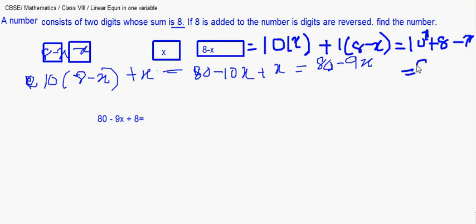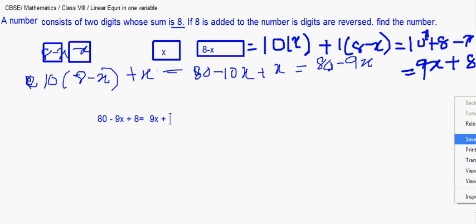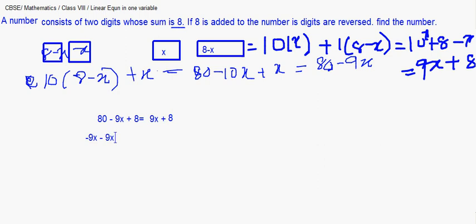The reversed number is 9x plus 8. We substitute this into the equation: 80 minus 9x plus 18 equals 9x plus 8. Carrying minus 9x to the left and 88 to the right gives us the equation to solve.